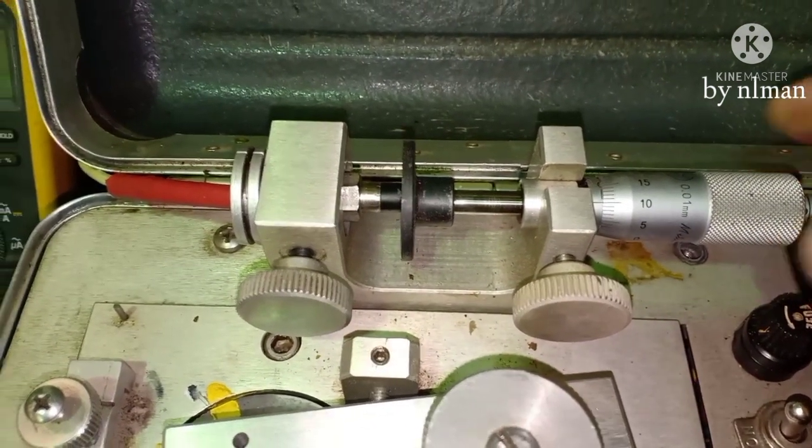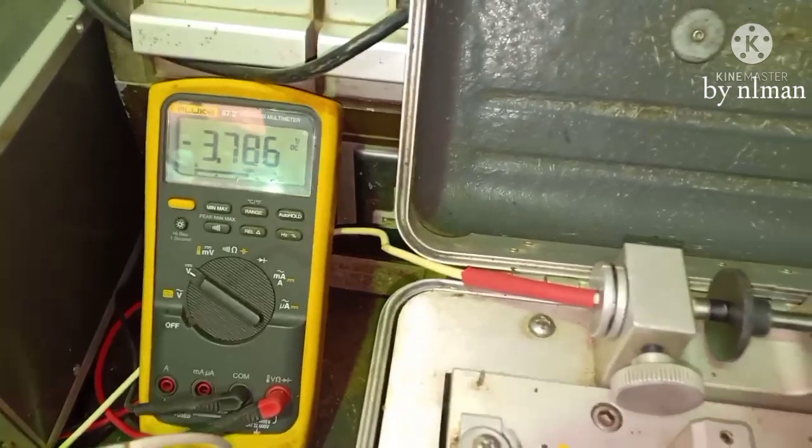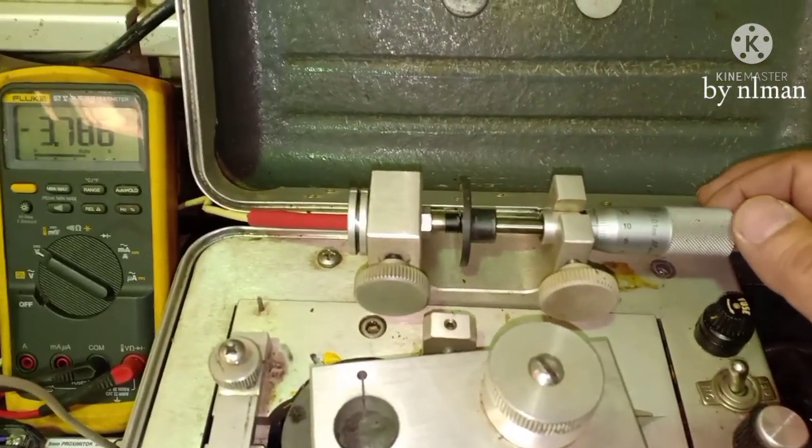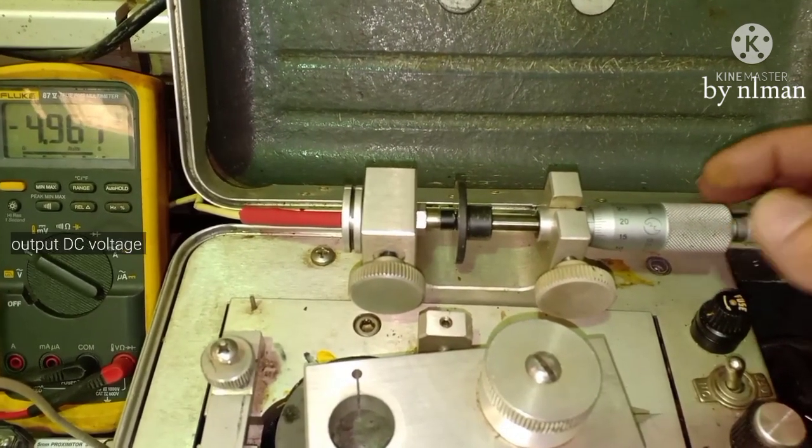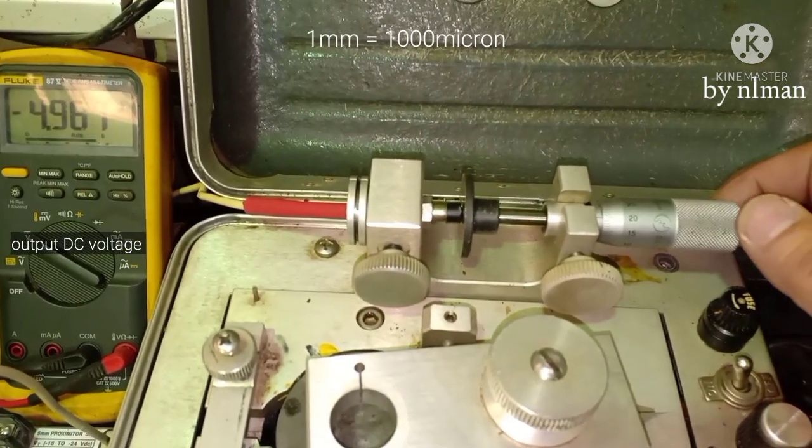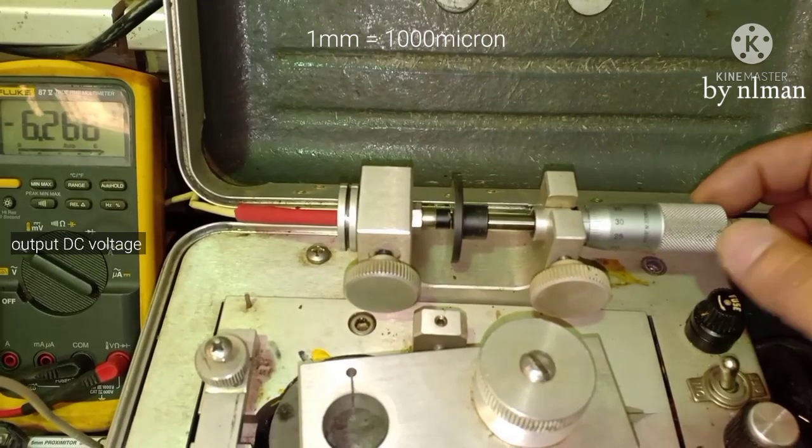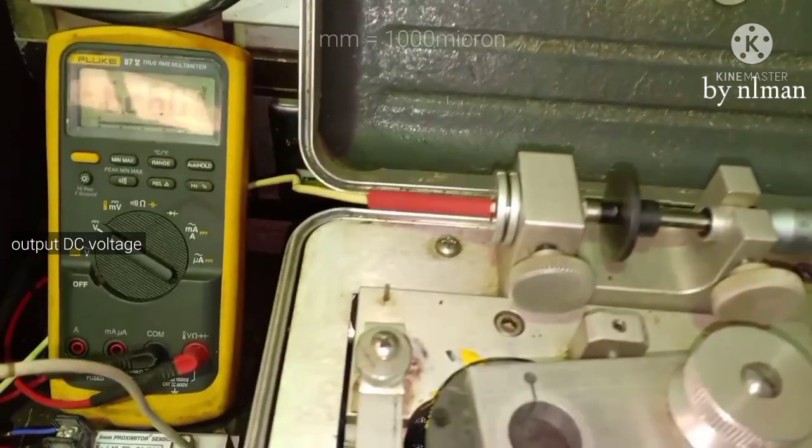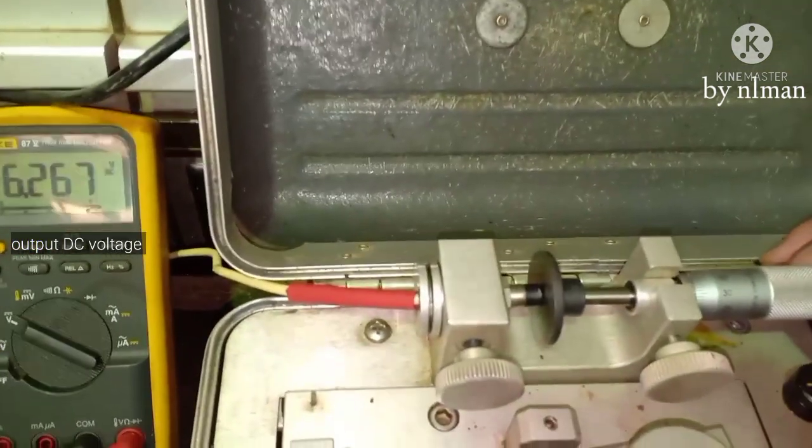100 microns, so we have 3.7, okay. So go on, 100 microns, 200 microns, 4.9. 300 microns, 6.2, okay.